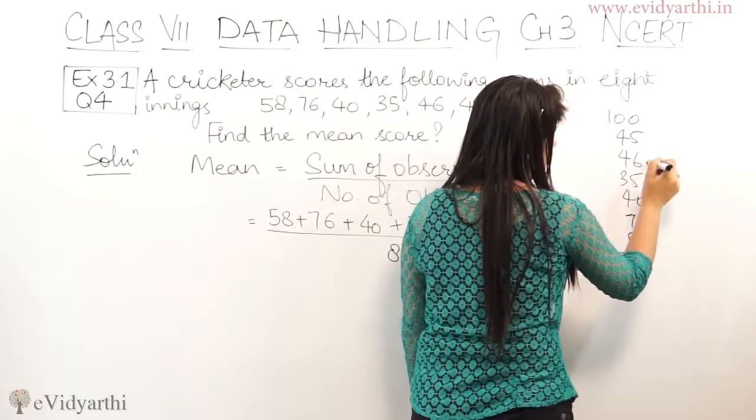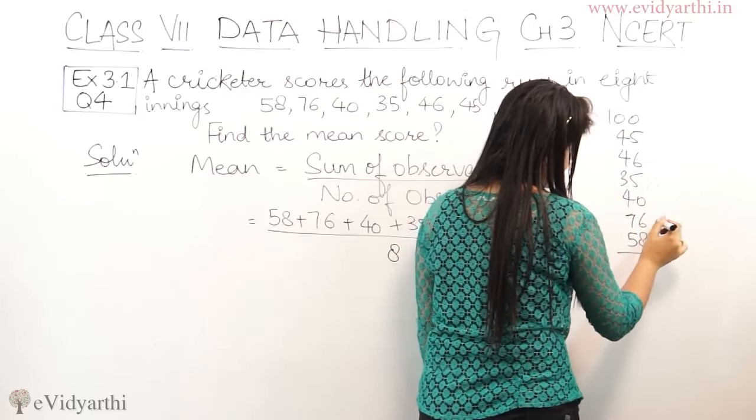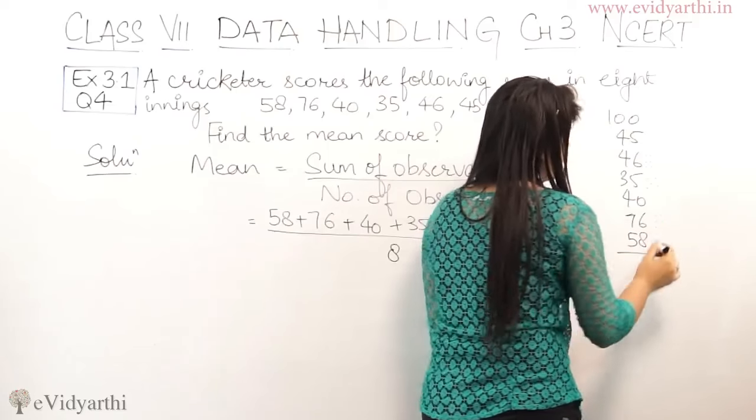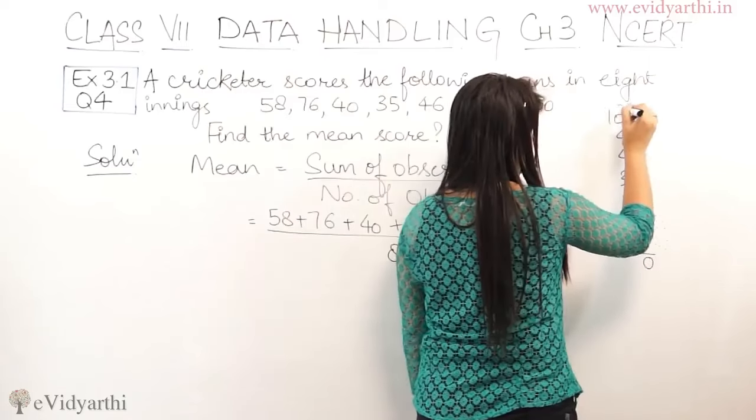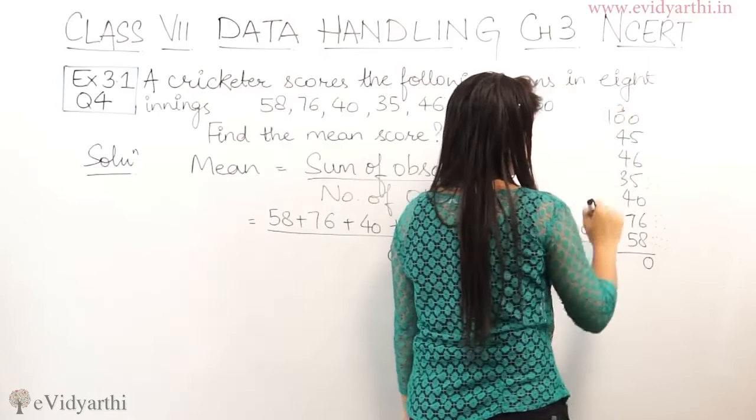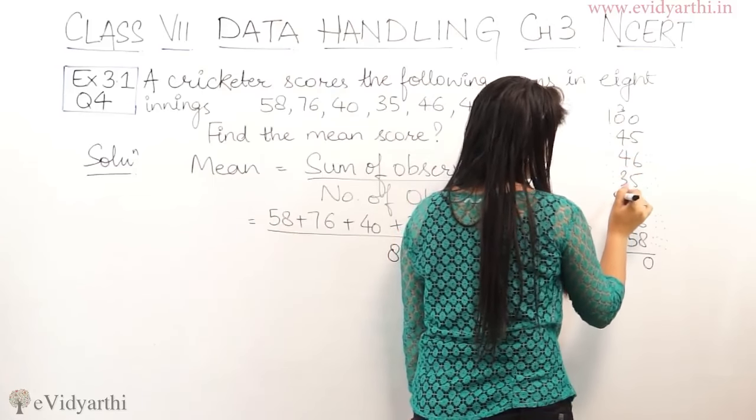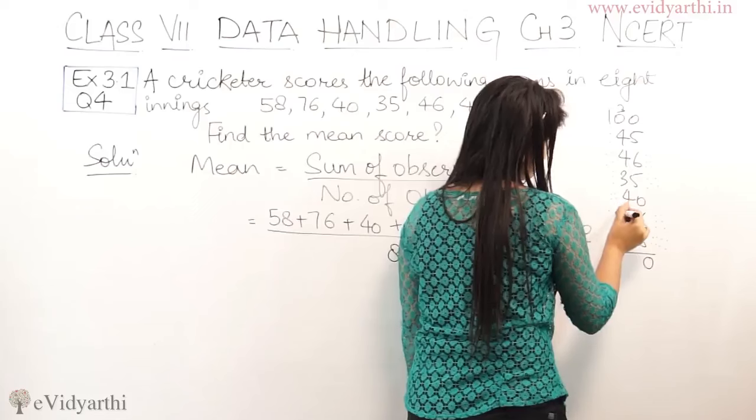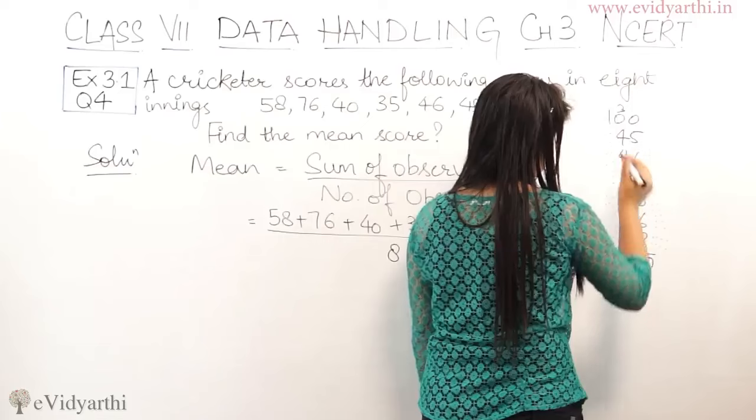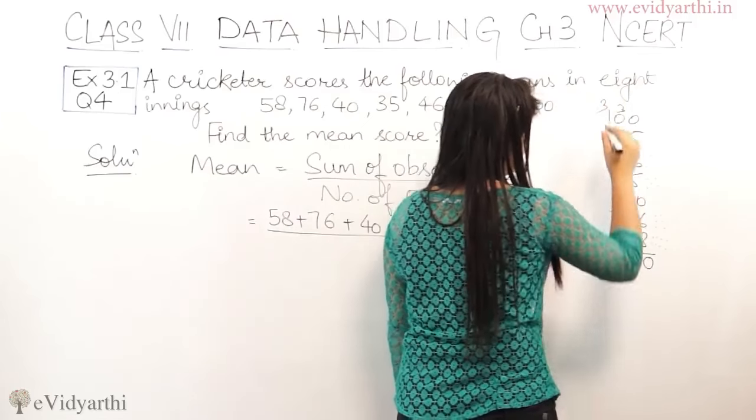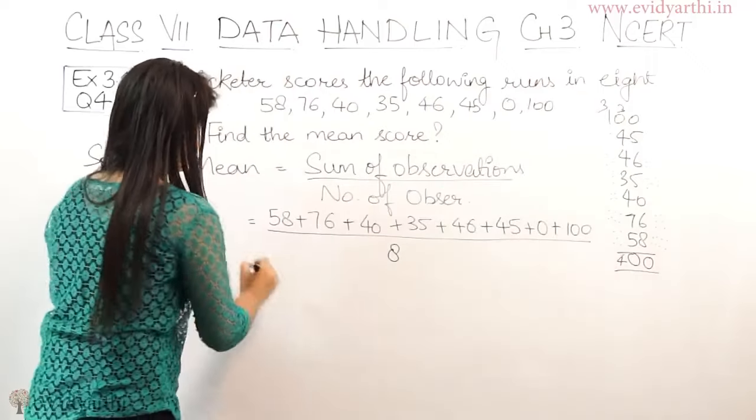Now we need to add. [Counting and adding step by step through the units, tens, and hundreds columns] This comes out to be 400.